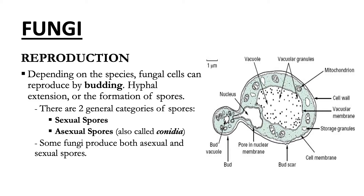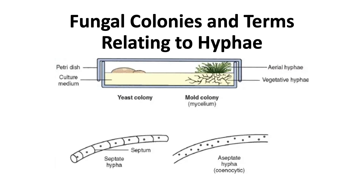Many people are allergic to fungal spores. This slide shows a cross-section of a petri dish with a culture medium used in the laboratory to grow fungal colonies. Under the microscope, we can see and identify if the fungal specimen has septa or if they are aseptate.